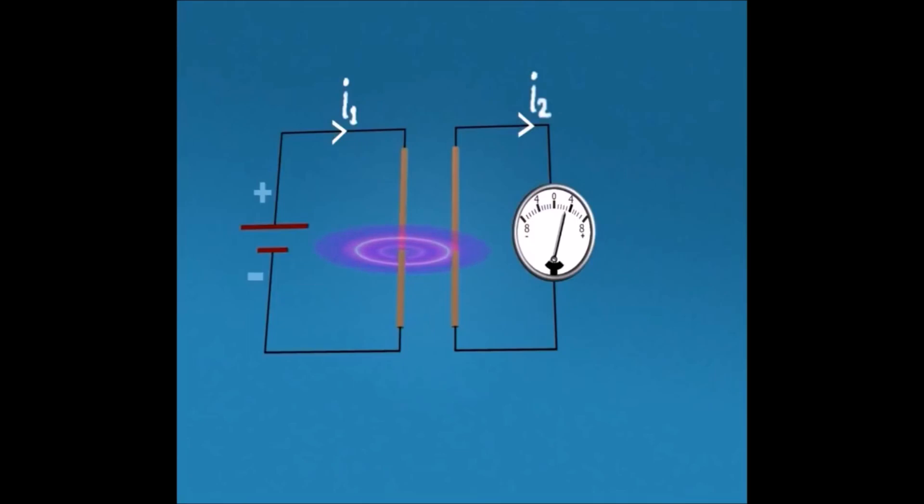But after some time deflection becomes zero because both conductors are stationary, means there is no relative movement between them.